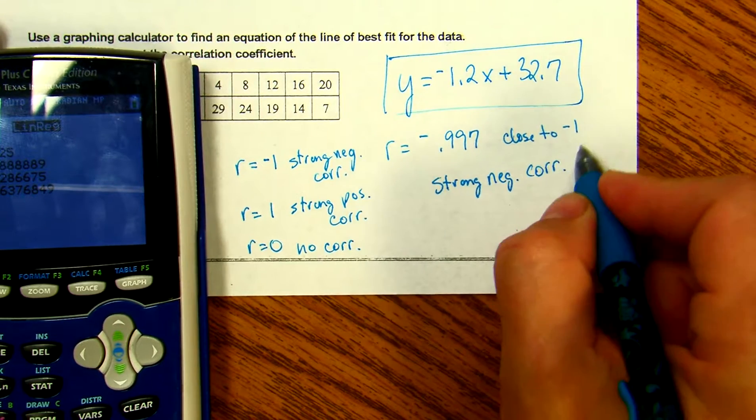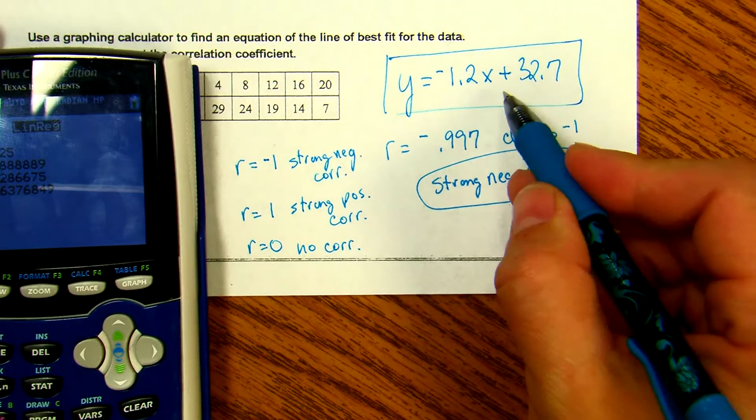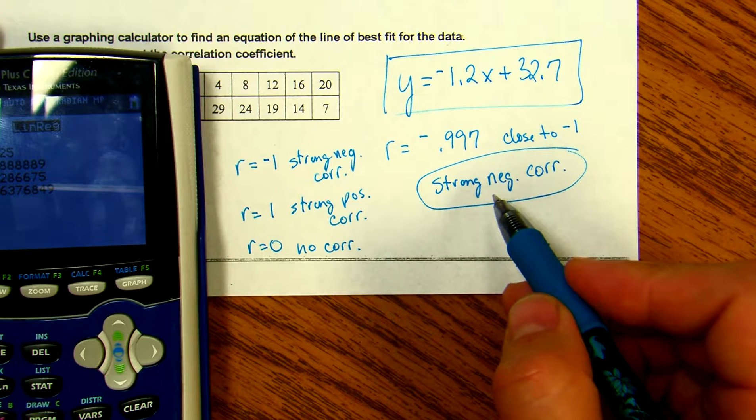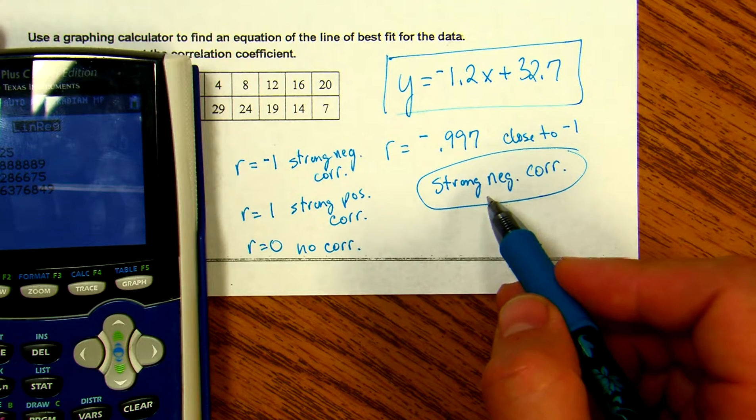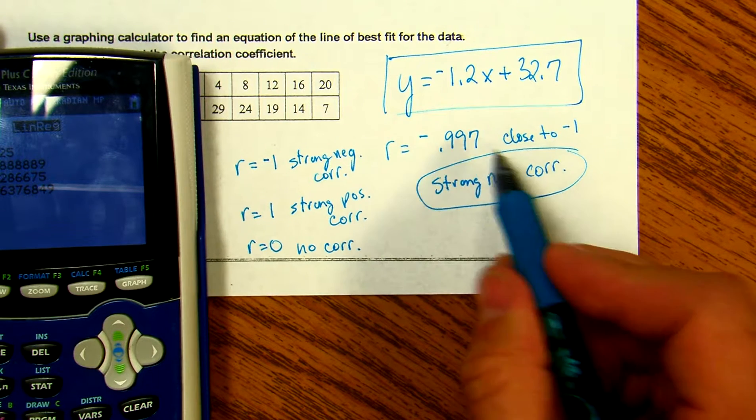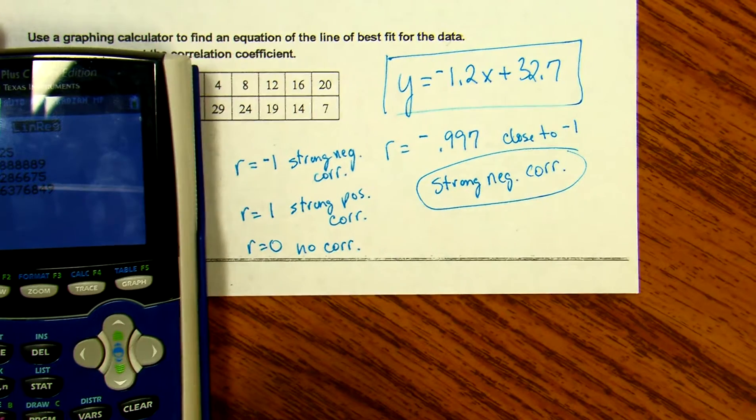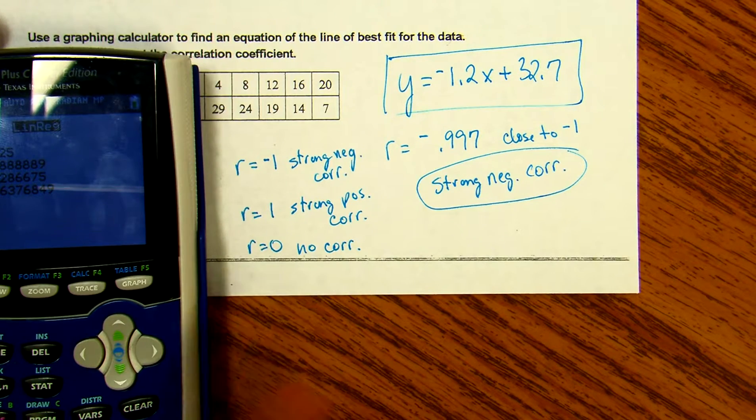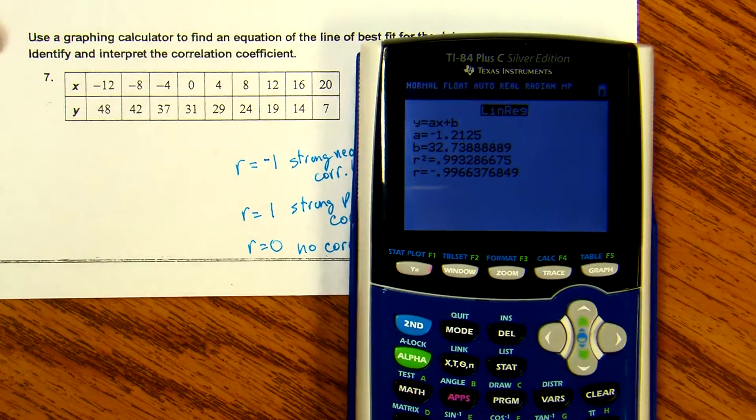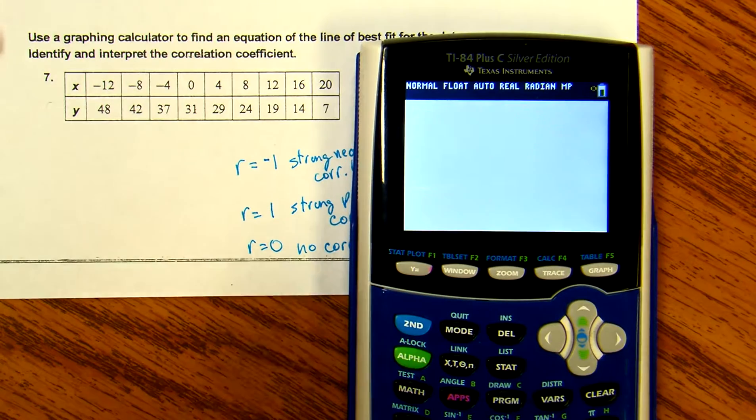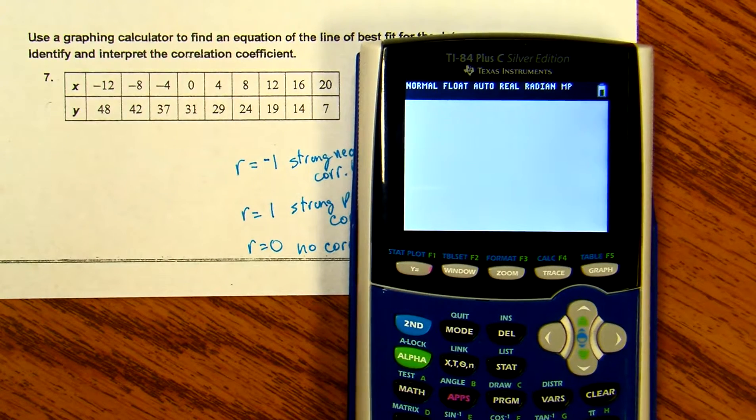It's very close to negative one and has a strong negative correlation. That's your example of how to use a calculator to find your linear regression coefficients, correlation coefficient, and an interpretation. One other thing: if your calculator does not show the r value...